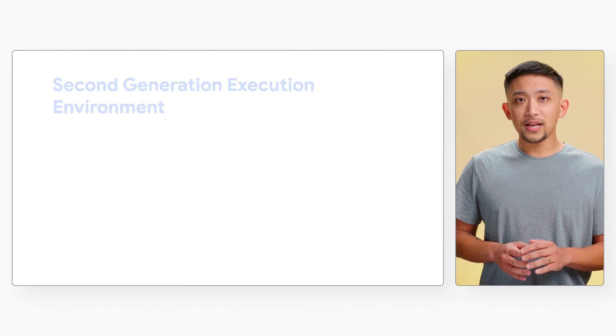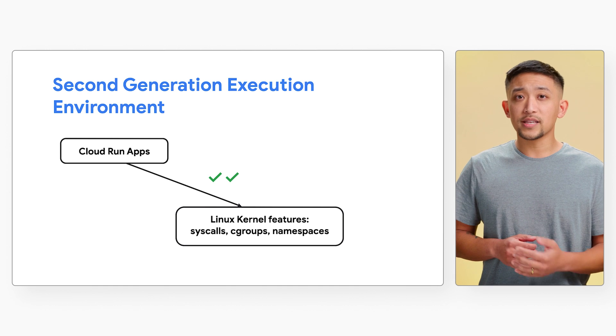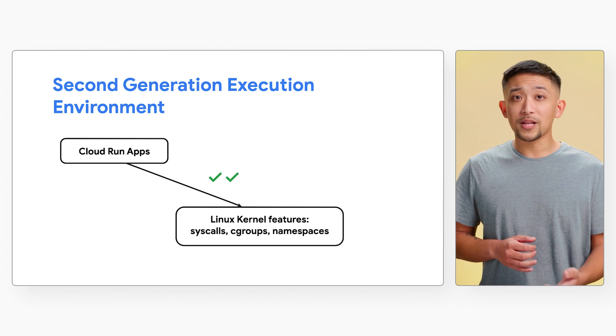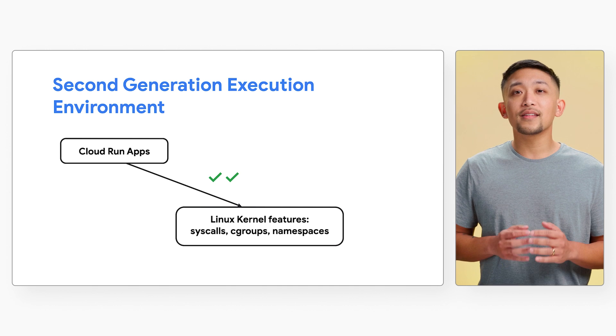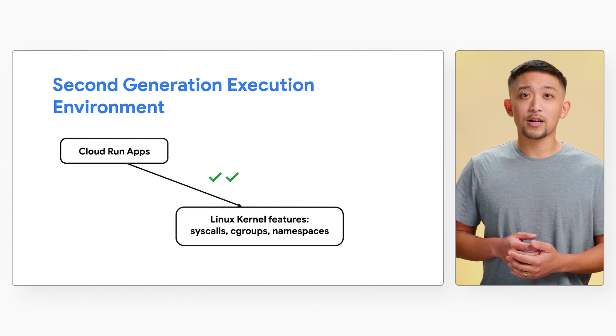Let's dig into the second generation execution environment. Right off the bat, this environment provides faster CPU and network performance for CPU-intensive workloads or workloads sensitive to packet loss. In addition to this, it also supports all kernel-level Linux features — syscalls, cgroups, namespaces, you name it. This increases the number of migration targets of legacy software that used to not be able to run in Cloud Run due to some missing Linux support.